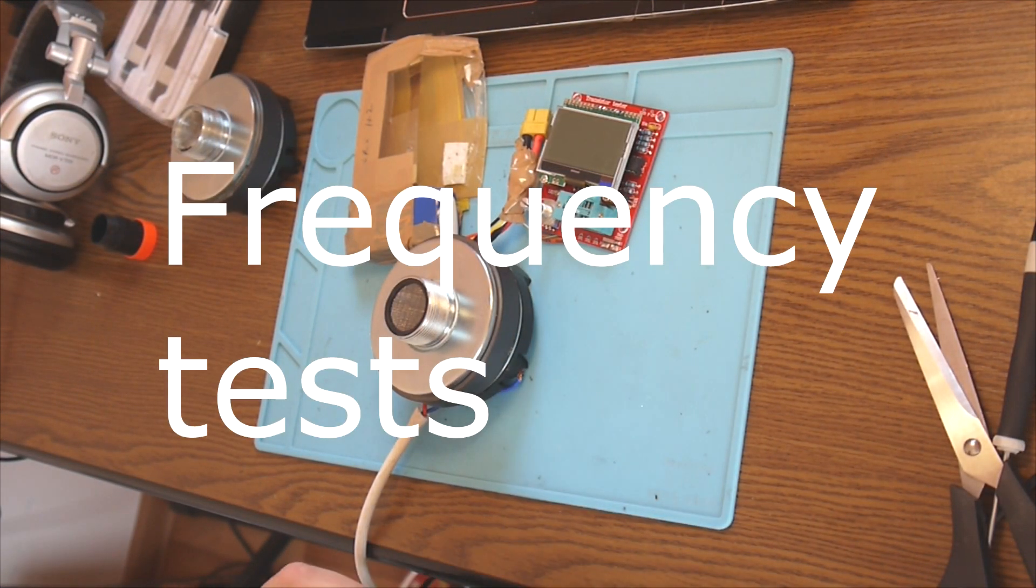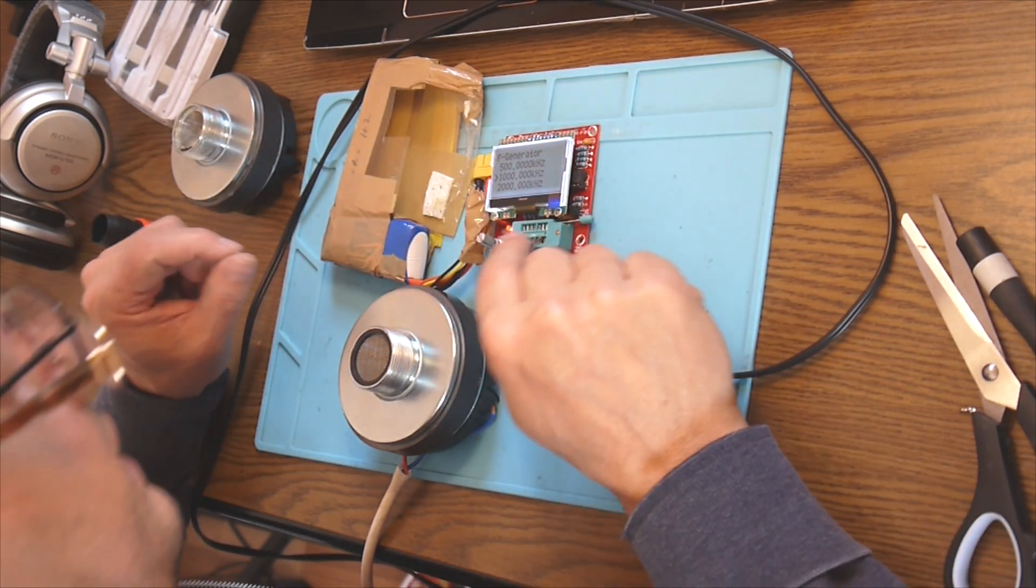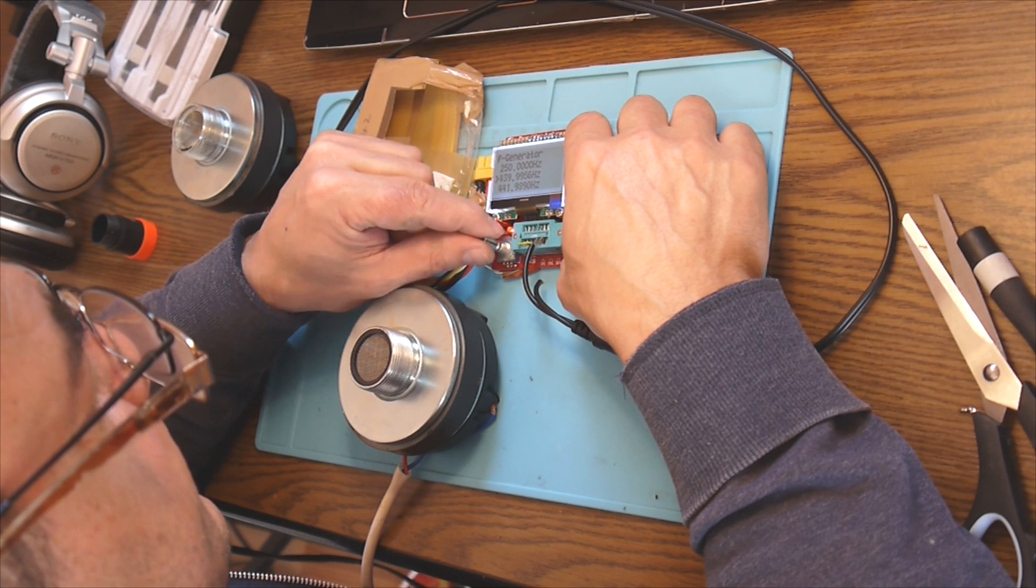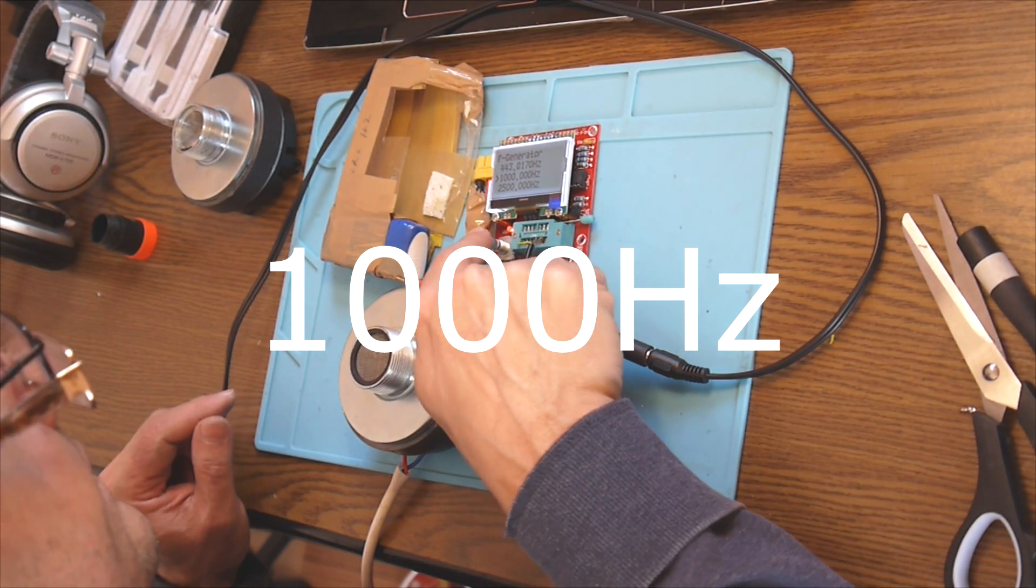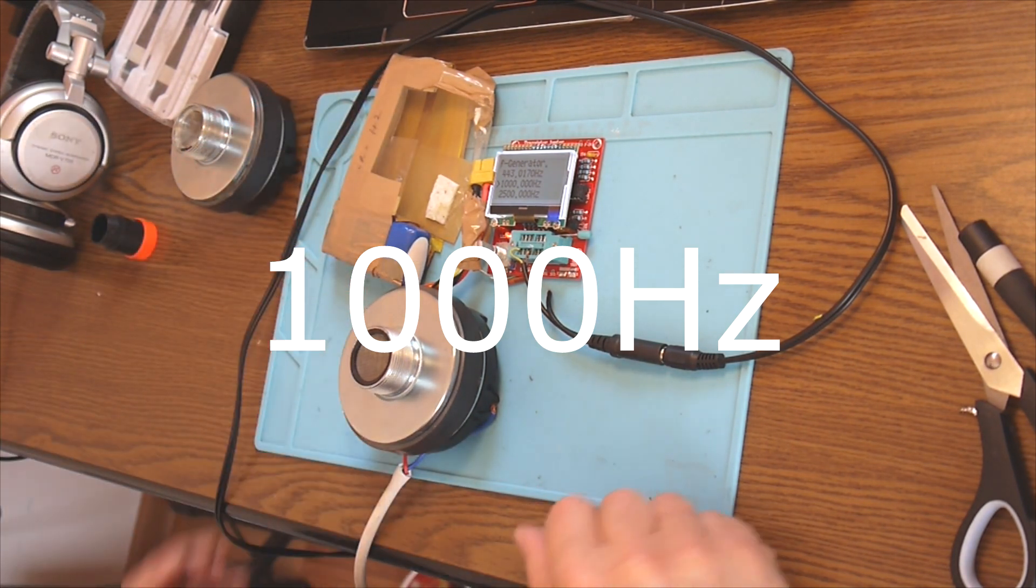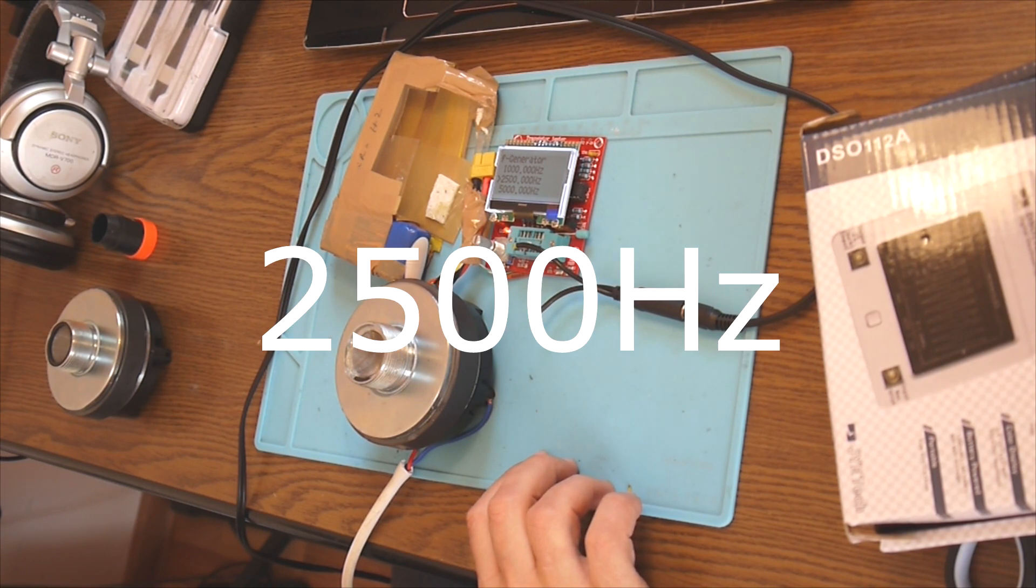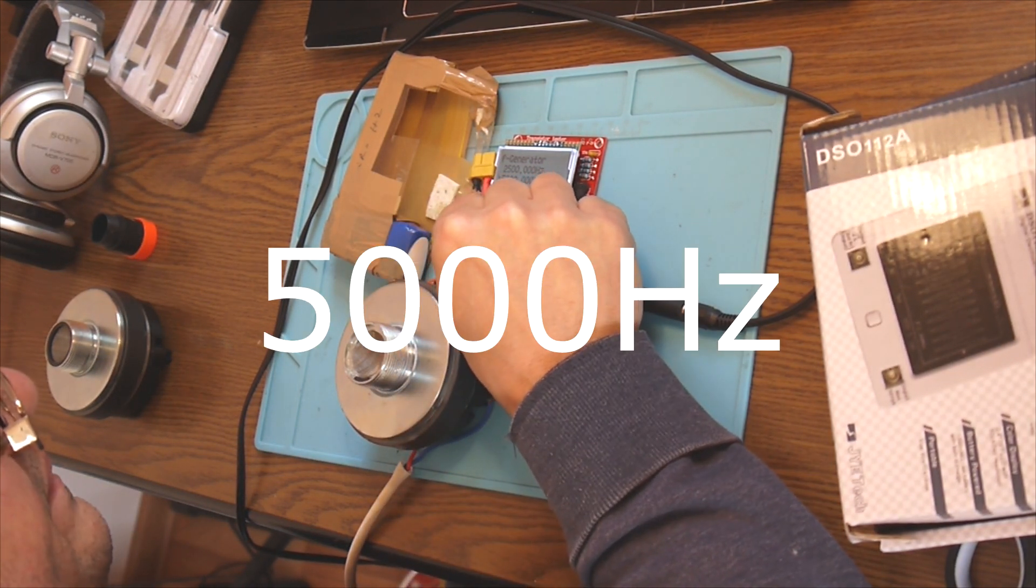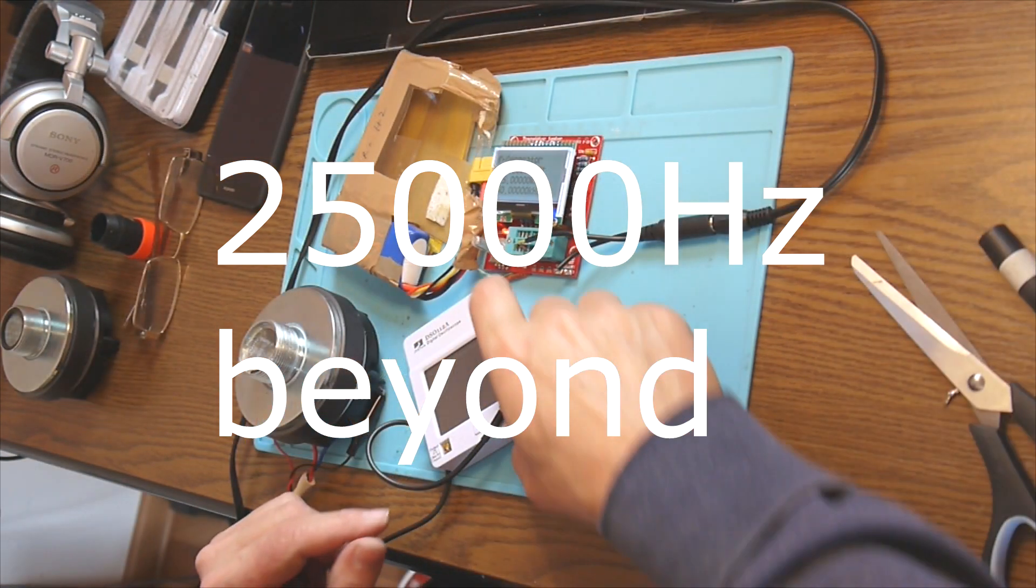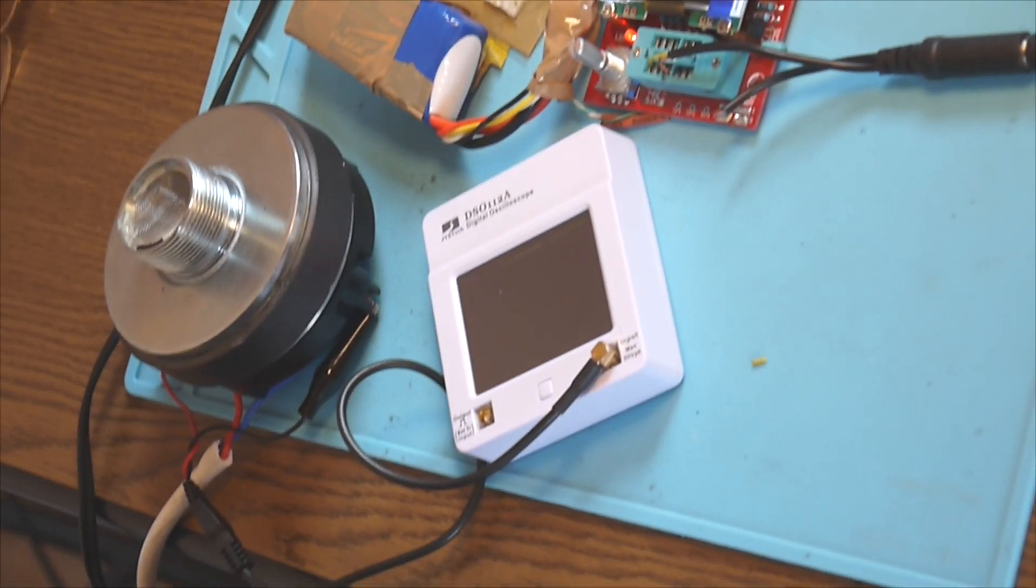So I'm gonna use this adapter frequency generator. Okay, so let's have one thousand hertz. Sounds nice and clear. Two thousand five hundred hertz. Five thousand. Ten thousand. And 25,000. There we go. So we have 25 kilohertz here.